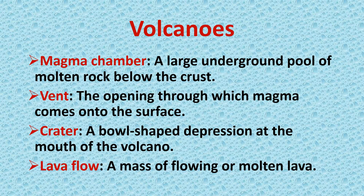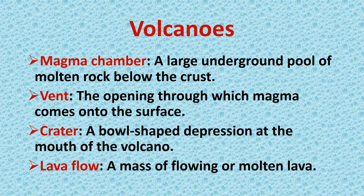Examples of endogenic forces are volcanoes and earthquakes. A volcano is an opening in the earth's crust through which molten materials such as ash and hot gases are thrown out. This happens due to internal pressure which pushes the molten material inside the earth, called magma, to the surface through an opening. This opening is called a vent, and this complete process is called volcanic eruption.